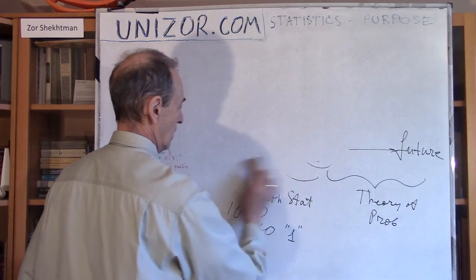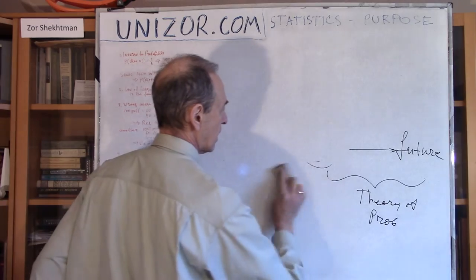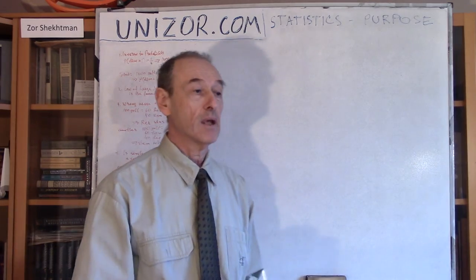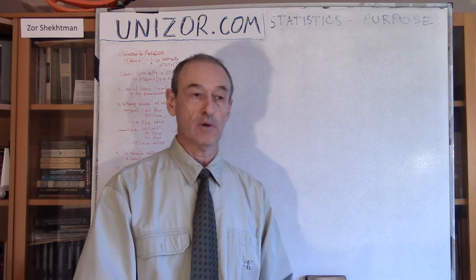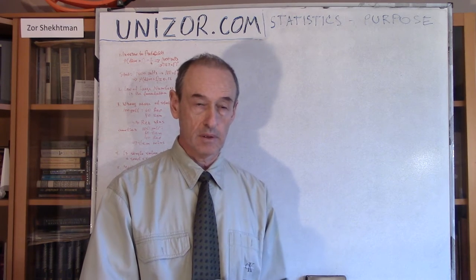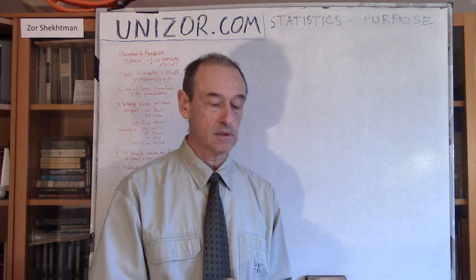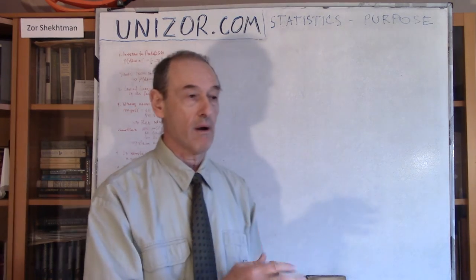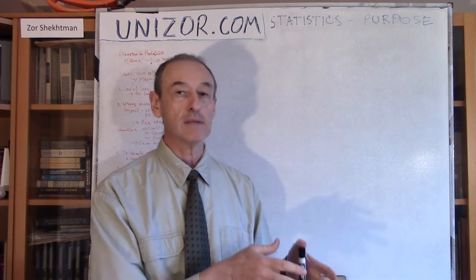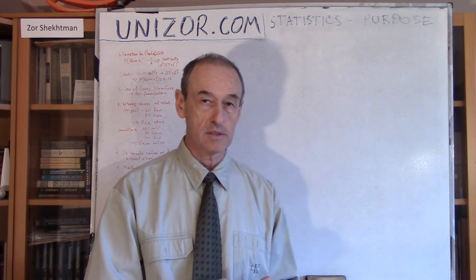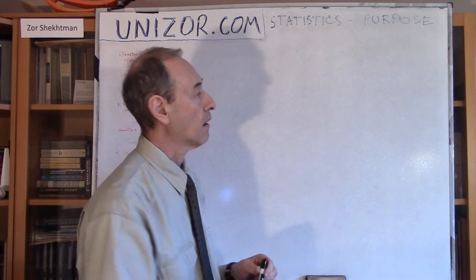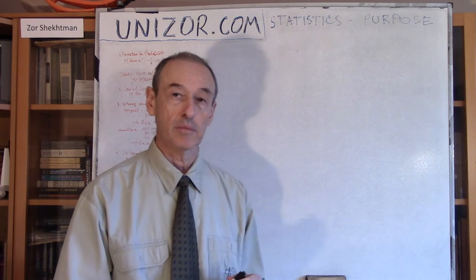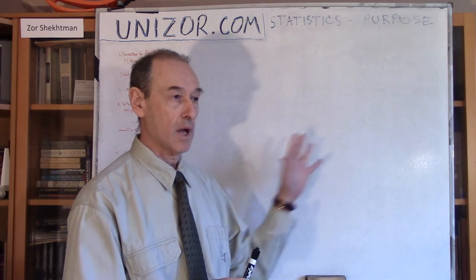Why can we say that if we get 160 ones out of 1,000 rolls, the probability is around 0.16? This is all based on the law of large numbers. If you go back to theory of probabilities and study the law of large numbers, you will understand that it is the main foundation for mathematical statistics. There is also another very important theorem — the central limit theorem — which will be very important in our predictions.